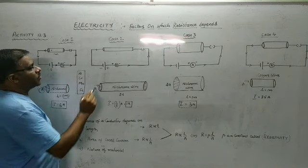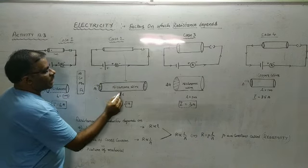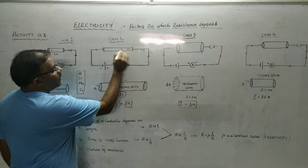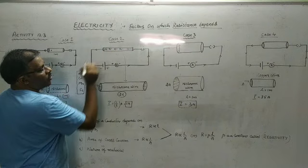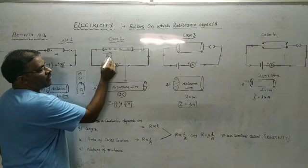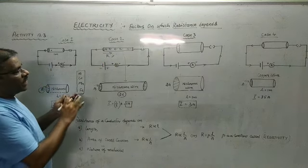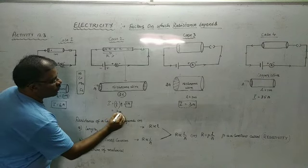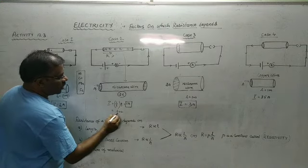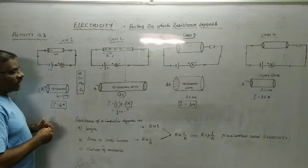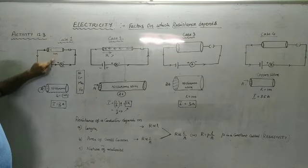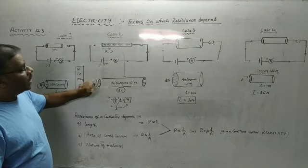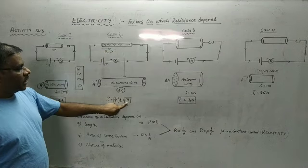In the next activity we take a similar nichrome wire, but this time the length has been increased to twice the earlier length — 2 meters. When the electrons flow from the negative end to the positive end, they have to travel more distance, so the resistance offered to the flow of electrons will be more. If resistance is more, the total current in the circuit will become half — equal to 1 ampere.